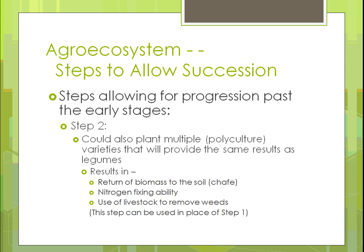Planting different varieties could provide the same result as cover crops or legumes like alfalfa. If you get the right combination of plants, you'll get biomass returned to the soil — the chaff or remainder of the plant after harvest. Nitrogen-fixing plants put nitrogen back into the soil. Using livestock to pasture and remove weeds can really help allow the recovery progression to happen naturally. This step two could also be used in place of step one.